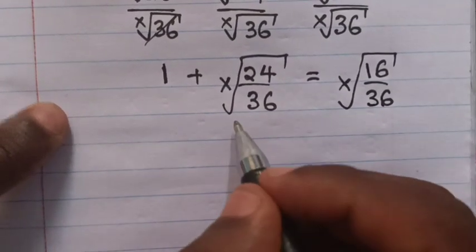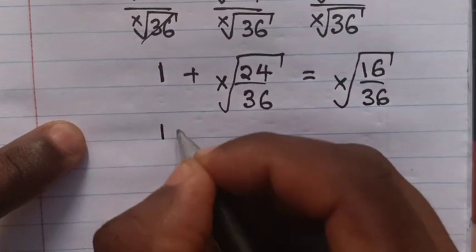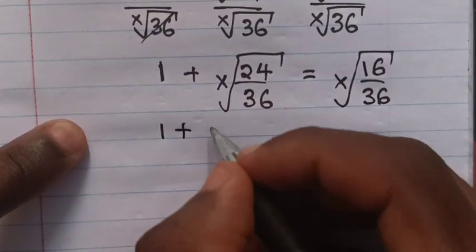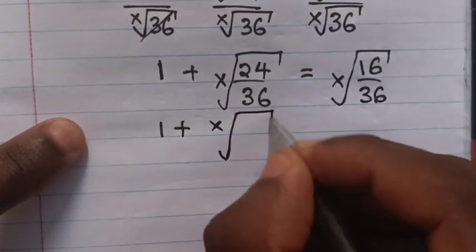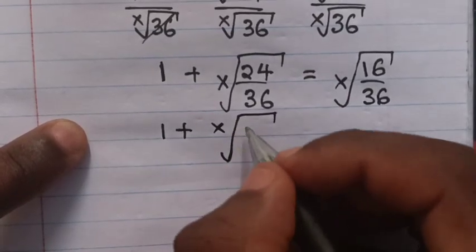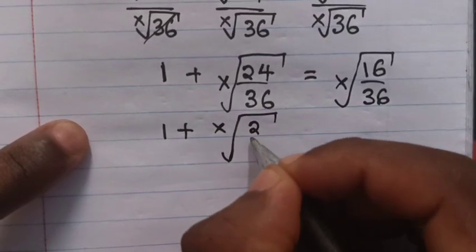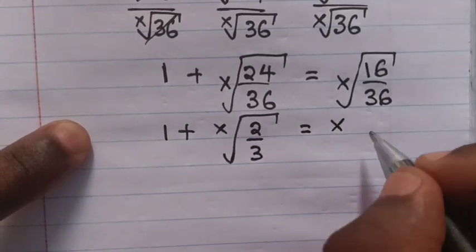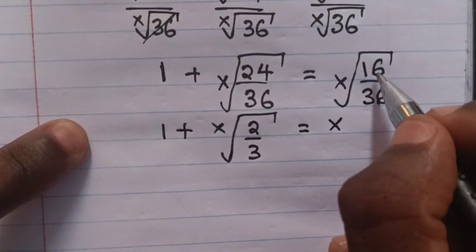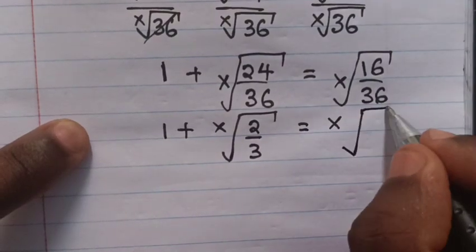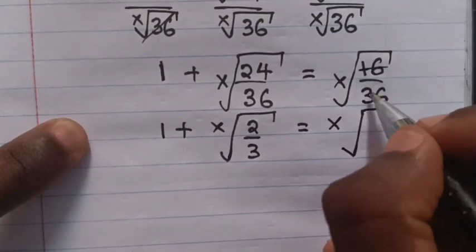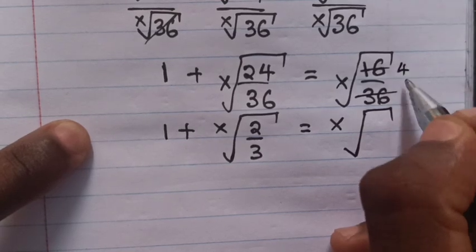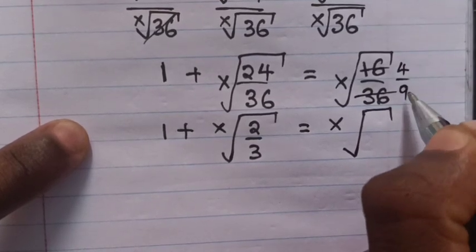1 plus 24 over 36 can be simplified as 2 over 3, giving root of x equals. And 16 over 36 can be simplified as 4 over 9.